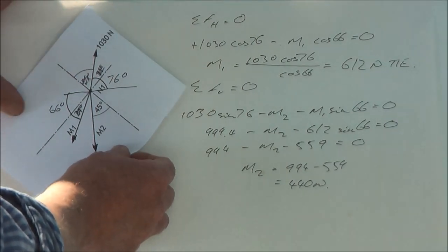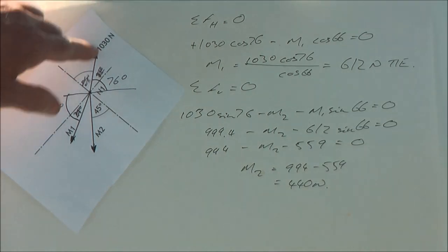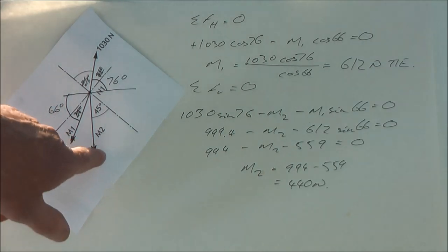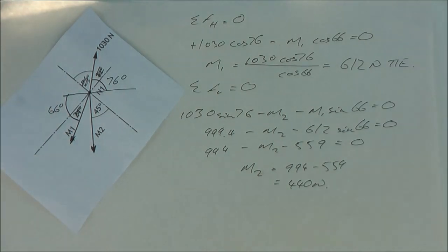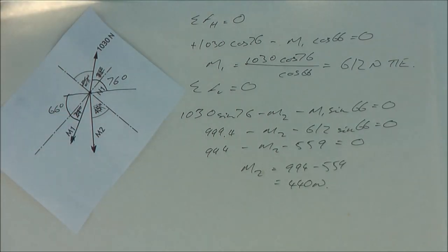So you have to recalculate the angles. So the 1030 is now making 76 degrees to the horizontal. M1 is 6 degrees below. And M2 is now just vertical. So maybe I should score out that 45. The M2 is just vertical.